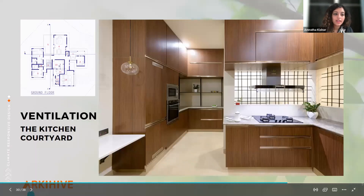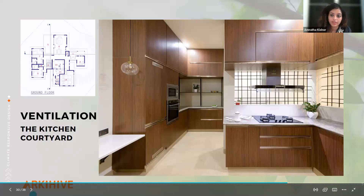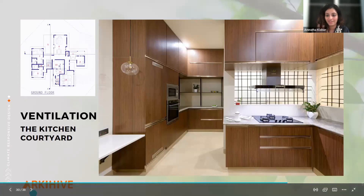The kitchen has a courtyard next to it, covered with only mosquito mesh and grills. Any heat or smells inside the kitchen — kitchens get very heated up because of cooking — automatically go out through this courtyard. There is no glass, just grills, so heat automatically escapes. Because of the courtyard you can also see the rains while cooking, and it really cools down the entire space.